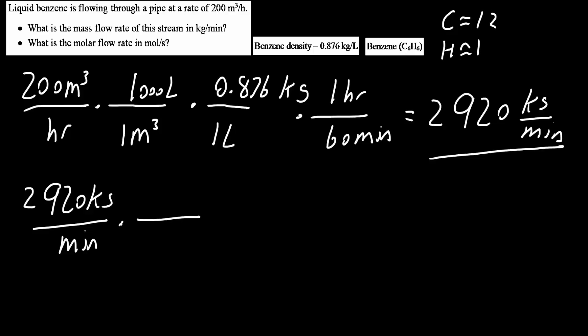So 6 times 12 plus 6 times 1 is about 78. This means it is 78 grams per mole.